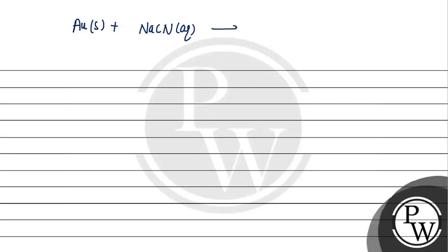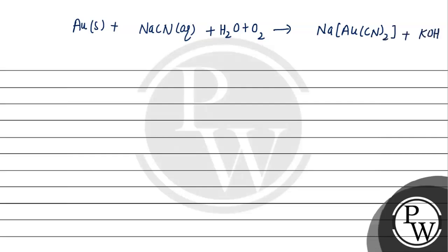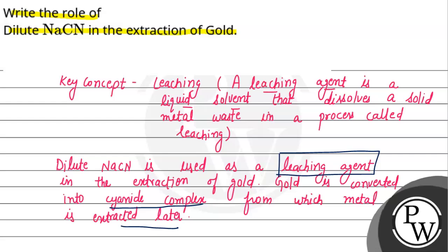जो complex compound बनता है — gold जो solid form में है वो dilute sodium cyanide (aqueous form) के साथ react करता है, plus water plus oxygen। इसका complex compound बनता है: [Au(CN)₂]⁻ plus KOH निकल जाता है। अगर हम इसे balance करें तो यहां पर 4, 8, और यहां पर 4। तो gold, sodium cyanide के साथ react करके एक cyanide complex compound बना रहा है जिसमें से हम metal को बाद में extract करते हैं।